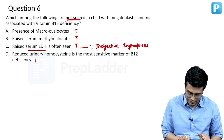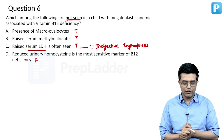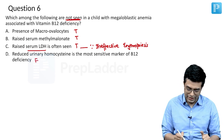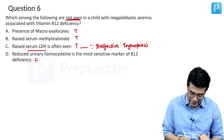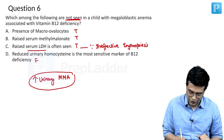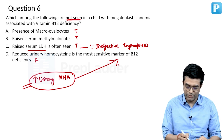The fourth option is a FALSE statement. The most sensitive marker of B12 deficiency is NOT reduced urinary homocysteine — it is RAISED urinary methylmalonic acid (MMA), which is a sensitive marker of B12 deficiency.